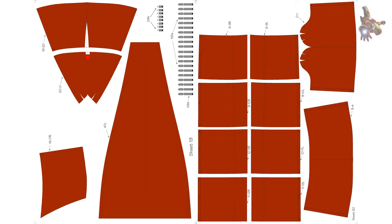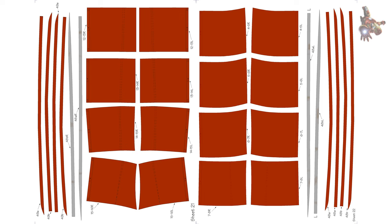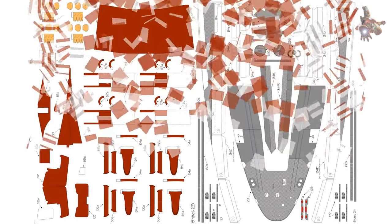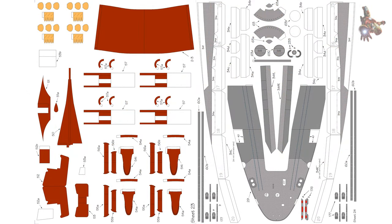Superstructure assembly instructions: Drawings 9 to 19 depict the assembly process for the bridge structure. The intricate task here involves properly shaping and fitting the complex sponsons that support the 127mm anti-aircraft gun mounts.